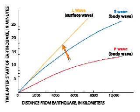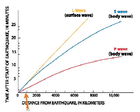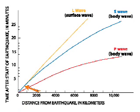And here's surface waves. Notice, when you're within a few hundred kilometers of an earthquake, the S waves and the surface waves are basically not distinguishable from one another. But they are distinguishable from the P wave.